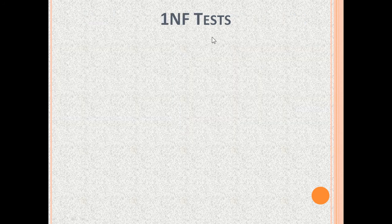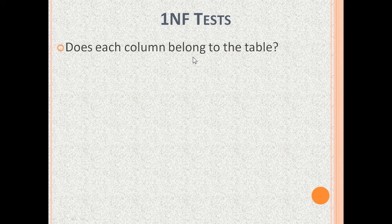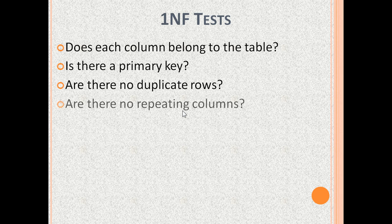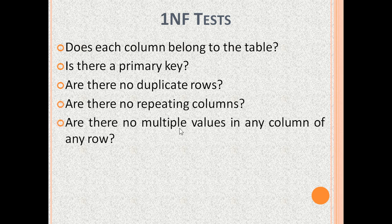Now we have seen database normalization explained with examples. Let us see how to test if each table is in 1NF. We need to check: Does each column belong to the table? Is there a primary key? Are there no duplicate rows? Are there no repeating columns? Are there no multiple values in any column in any row?